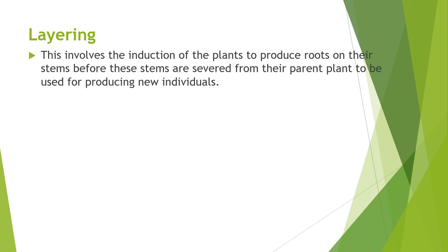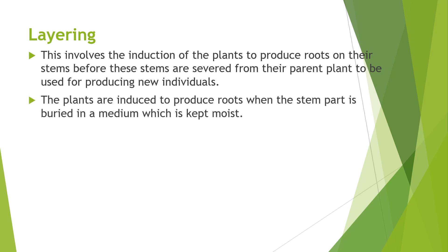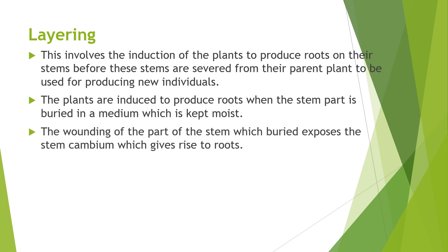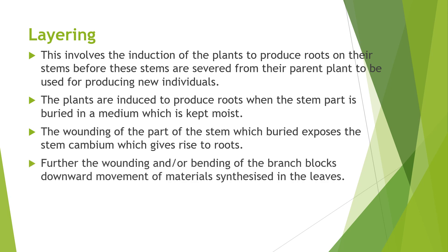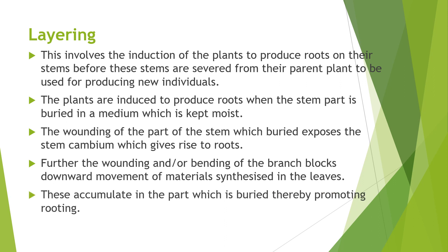Layering involves inducing plants to produce roots on their stems before these stems are severed from the parent plant to produce new individuals. The plants are induced to produce roots when the stem part is buried in a medium which is kept moist. Wounding the buried part of the stem exposes the stem cambium, which gives rise to roots. Wounding and slashing or bending of the branch blocks the downward movement of materials synthesized in the leaves, causing them to accumulate at the buried part and thereby promoting rooting.